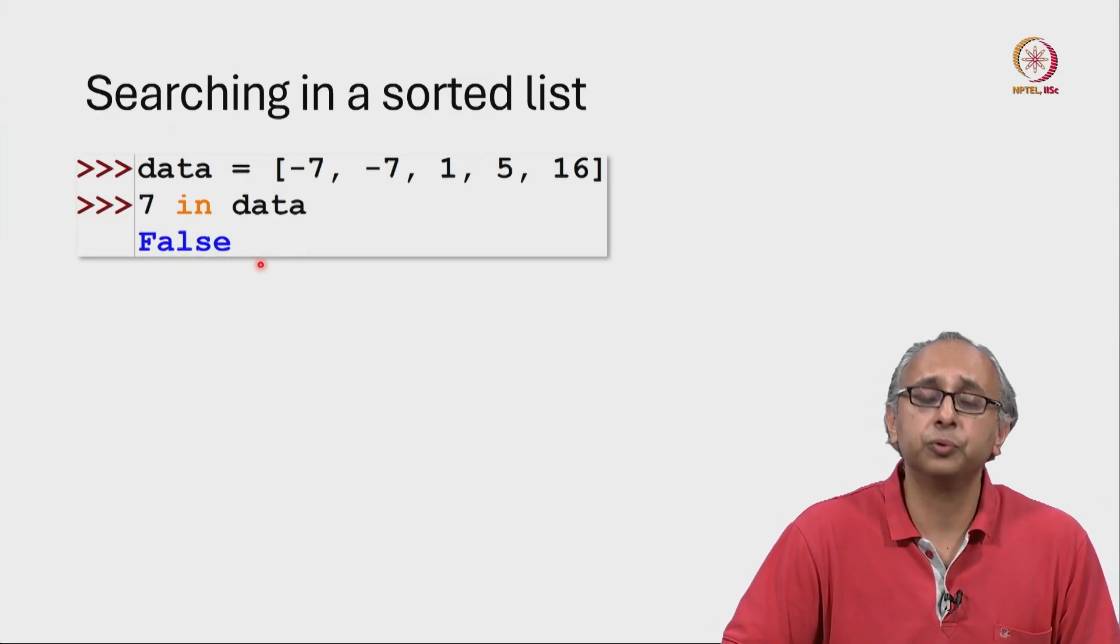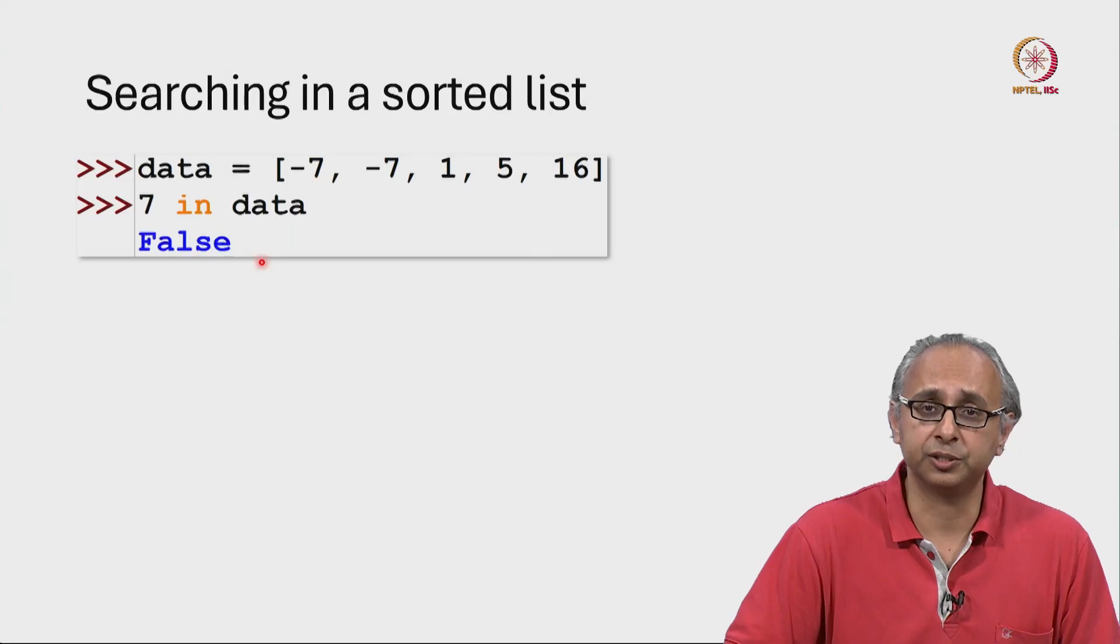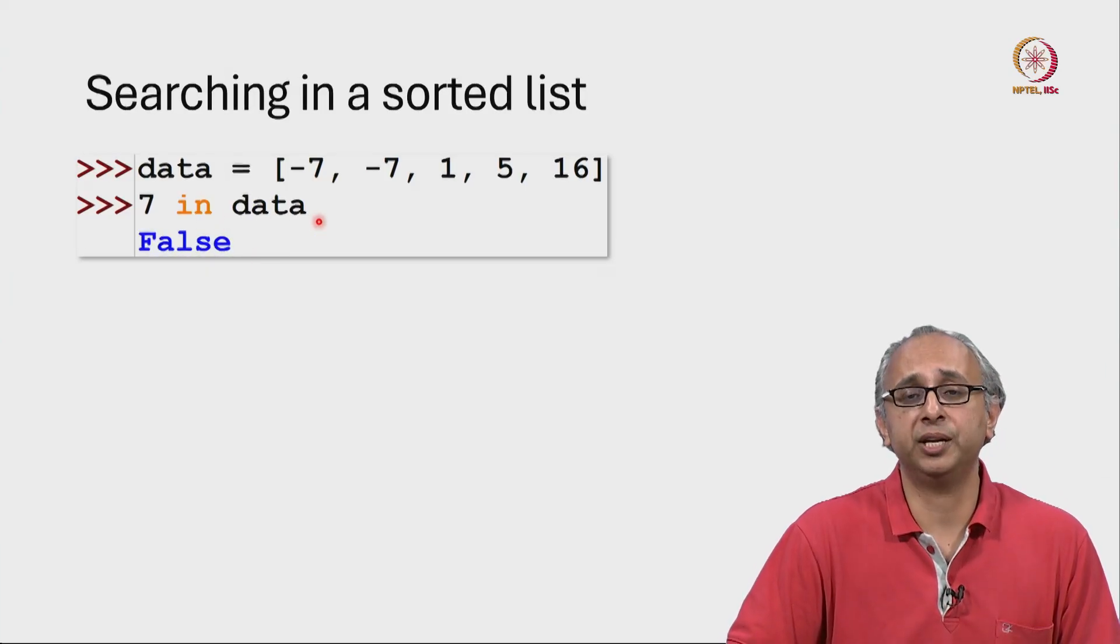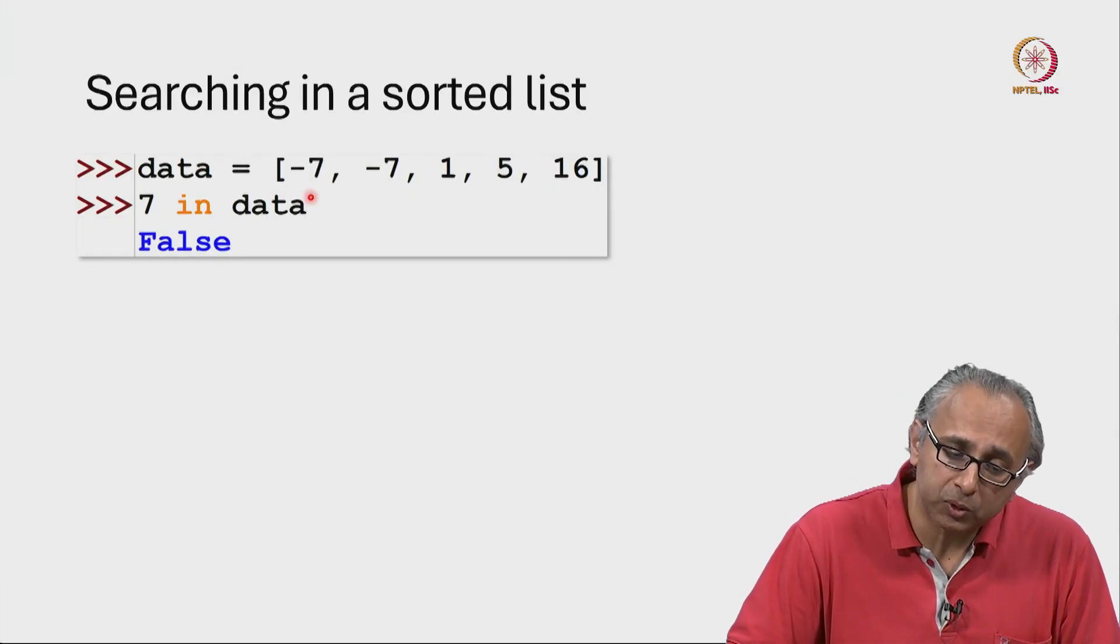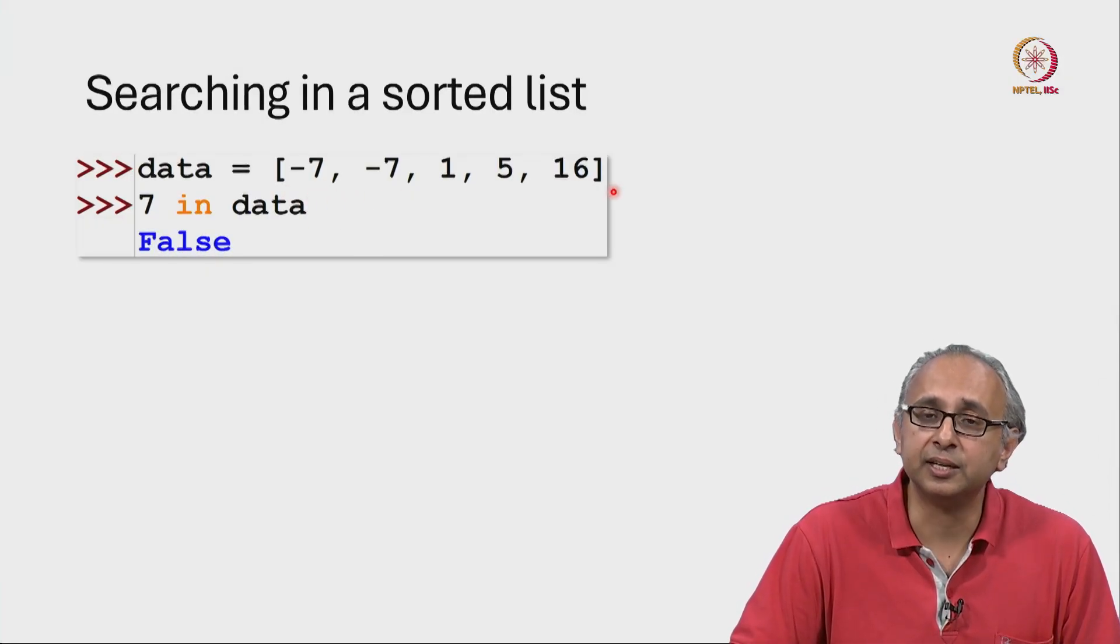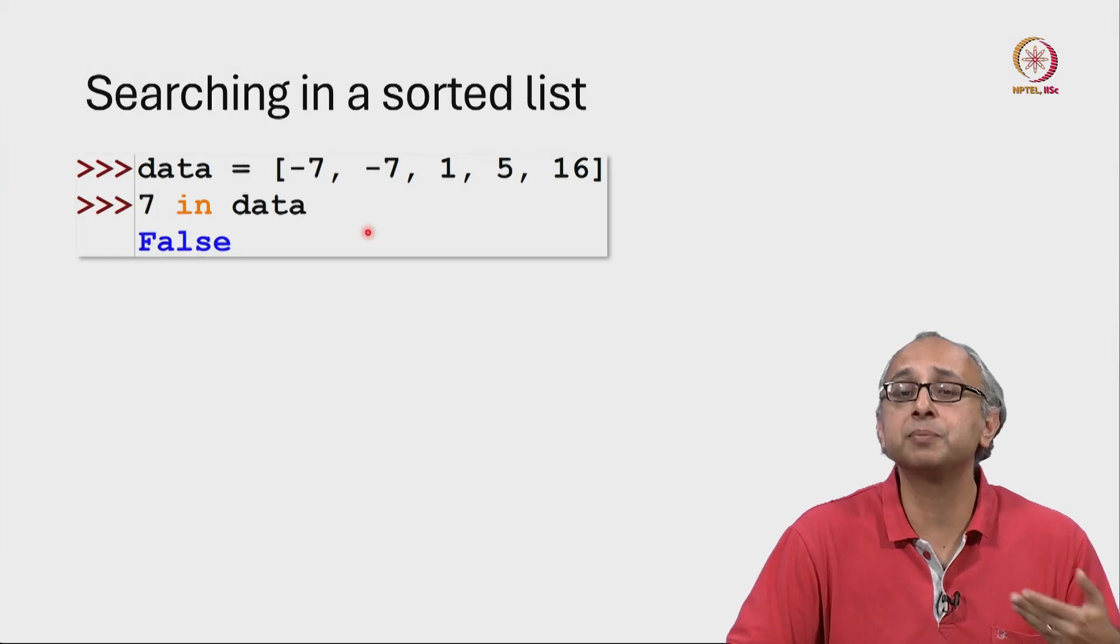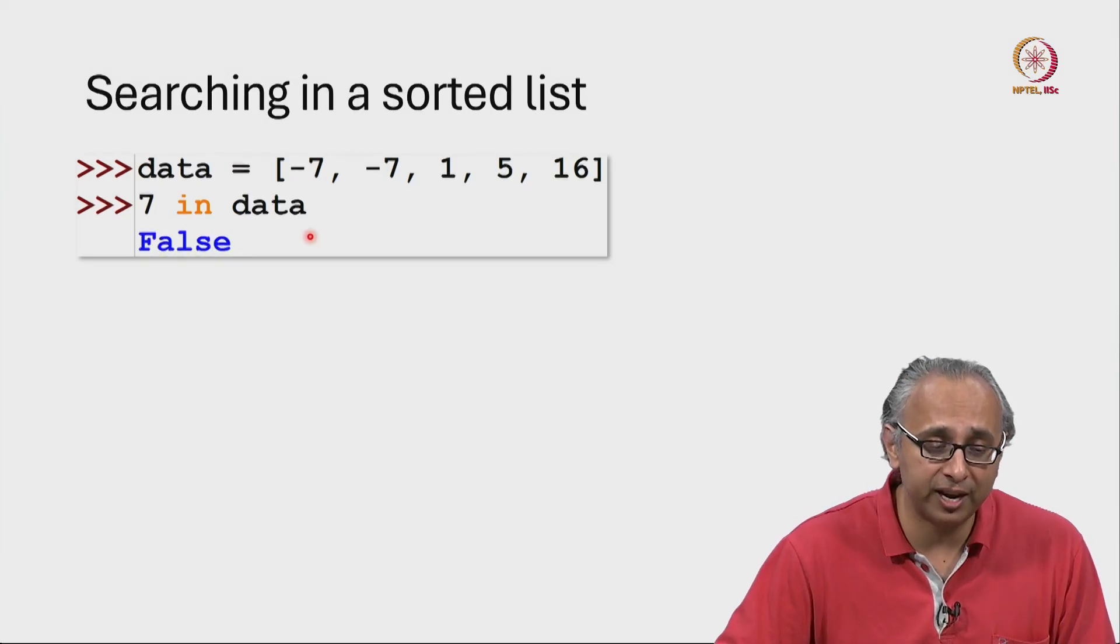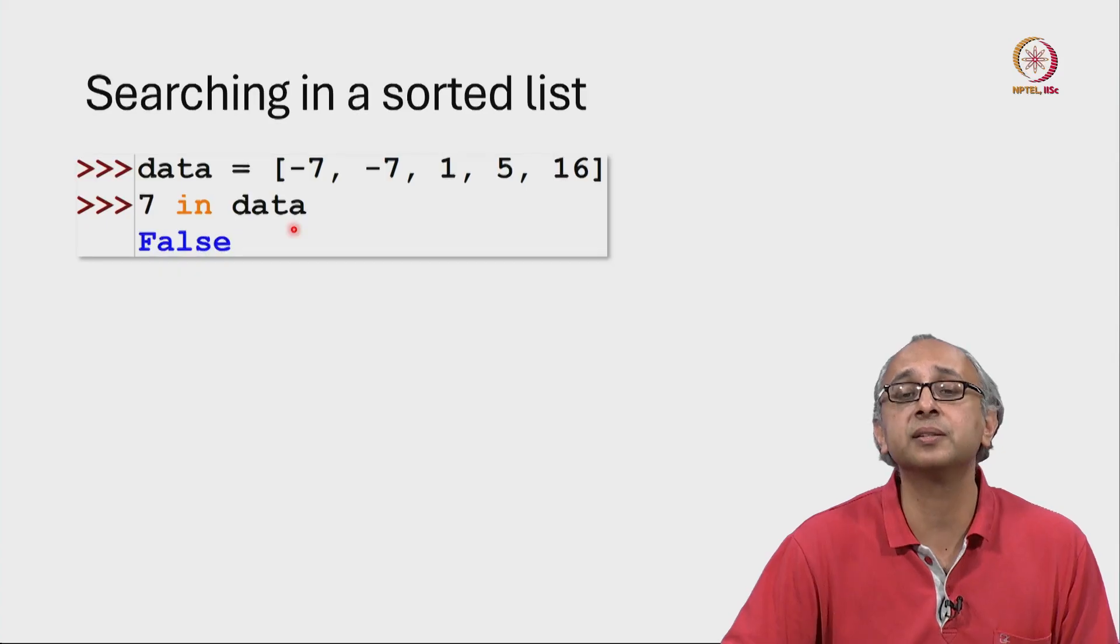Of course it's not, and so no surprise this returns false. Now, how does the in operator work? Well, it performs what we call a linear search. It just uses pattern 1: iterate until success, until it finds this item in this list.